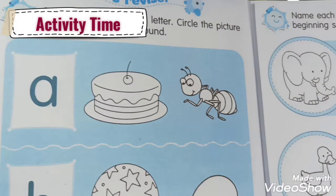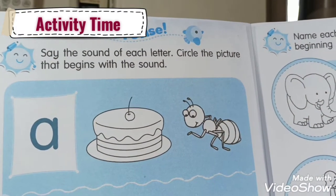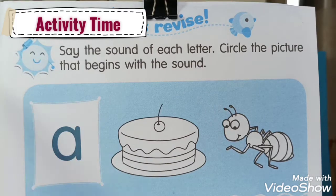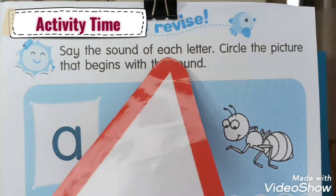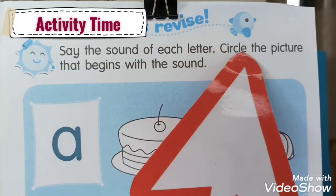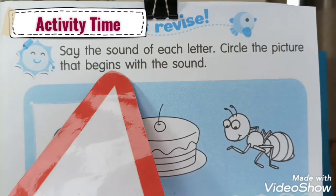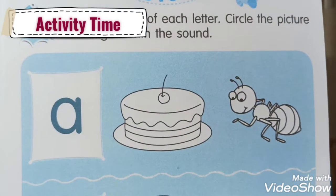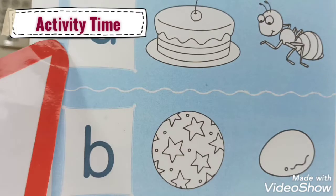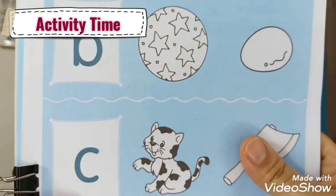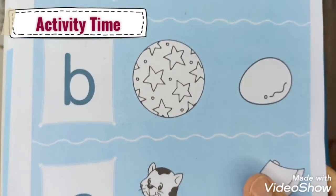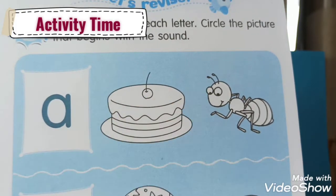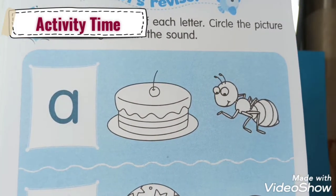Now it's our activity book. Please open to this page — page 14 and 15. Say the sound of each letter and circle the picture that begins with that sound.